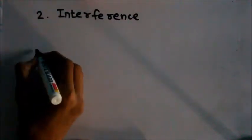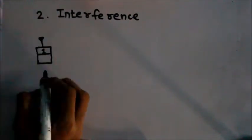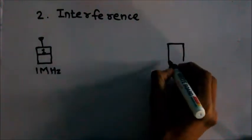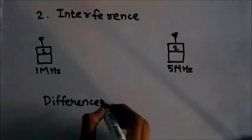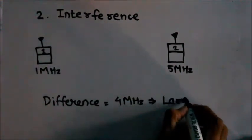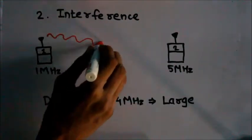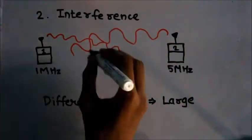For the problem of interference, if the stations transmit signals of high frequency like 1 MHz and 5 MHz, then the difference between the frequencies is very high - that is 4 MHz - and hence the waves will not mix with each other and interference will not take place.